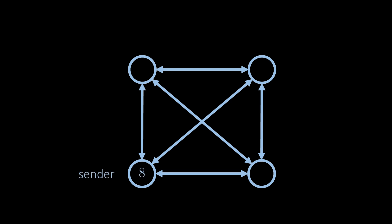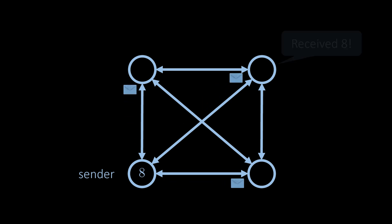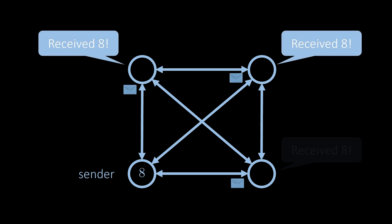Assume that one node is the current sender — that is, this node wants to broadcast a certain message, in the example the value 8, to all other nodes. In the simplest possible broadcast algorithm, the sender simply sends a message containing the value 8 to all other nodes. If all goes well, every node receives the message and the broadcast concludes successfully.